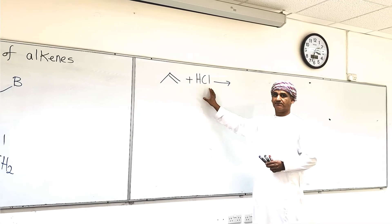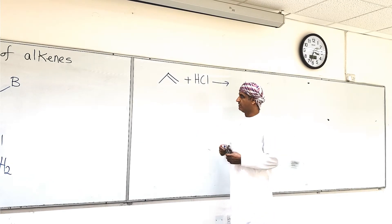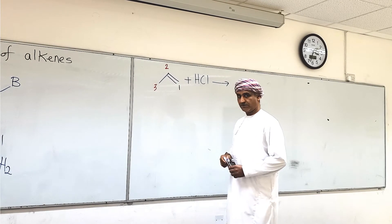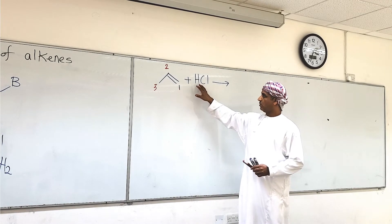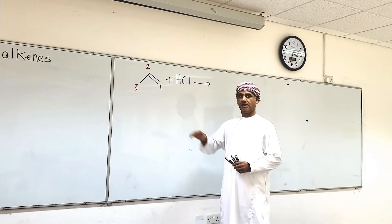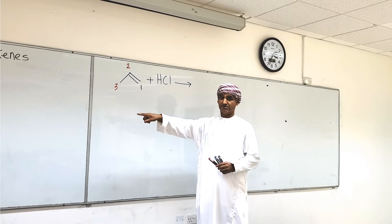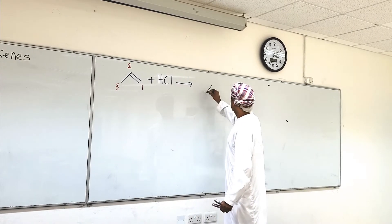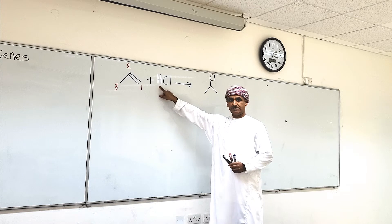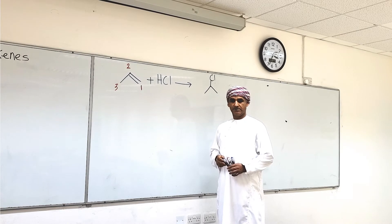In this reaction, it does matter where H bonds. If we number the carbons following IUPAC rules, this is carbon one, carbon two, and carbon three. So which carbon of the carbon-carbon double bond bonds to hydrogen, and which bonds chlorine? The product obtained is one where hydrogen of HCl bonds to carbon one and Cl bonds to carbon two — this is the only product obtained.